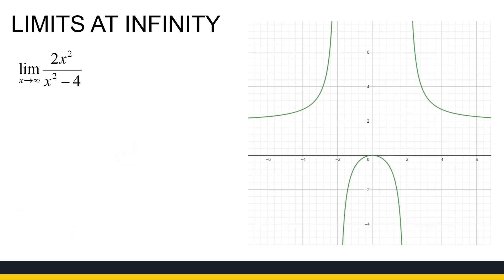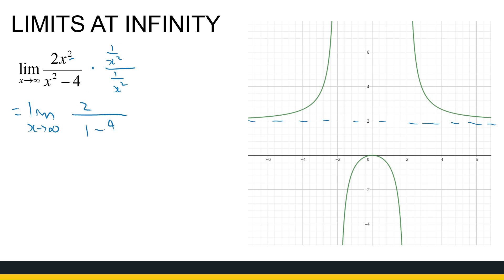Let's look at another example. From the sketch, as x goes to positive and negative infinity, there's a horizontal asymptote at 2. To do this algebraically, we multiply the numerator and denominator by 1 over x squared — it's valid since x is going to infinity, not zero. This gives us the limit as x approaches infinity of 2 divided by 1 minus 4 over x squared. As x goes to infinity, 4 over x squared goes towards zero. So the limit value is 2 divided by 1 minus 0, which equals 2. That's how we can also find horizontal asymptotes algebraically.